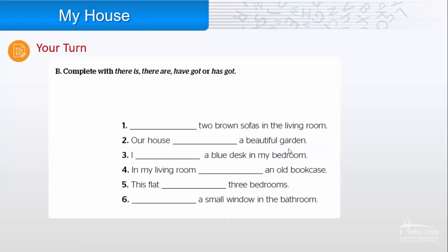Exercise B: complete with there is, there are, have got, or has got. One: There are two brown sofas in the living room. Two: Our house has got a beautiful garden. Three: I have got a blue desk in my bedroom. Four: In my living room there is an old bookcase. Five: This flat has got three bedrooms. Six: There is a small window in the bathroom.